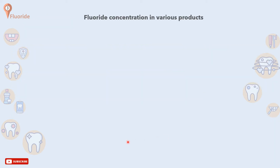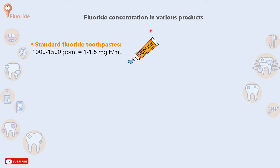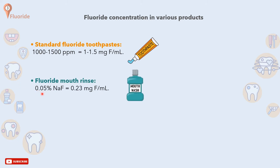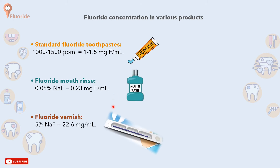We should be aware of the fluoride content in products used on a daily basis. A regular toothpaste tube contains from 1,000 to 1,500 parts per million of fluoride, which is equal to 1 to 1.5 mg of fluoride per milliliter. The fluoride mouth rinse contains 0.05% sodium fluoride, equal to 2,300 mg of fluoride per milliliter. Fluoride varnish used in dental practice contains about 5% sodium fluoride, equal to 22.6 mg per milliliter.